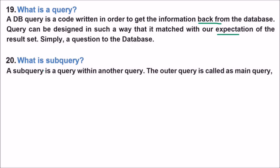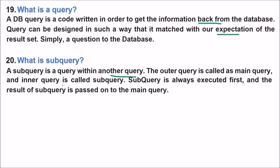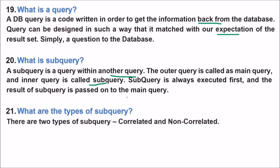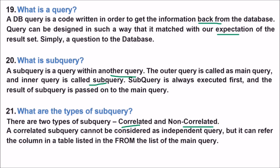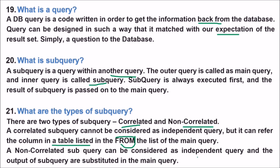What is a subquery? A subquery is a query within another query. The outer query is called the main query and the inner query is called the subquery. The subquery is always executed first and its result is passed to the main query. There are two types: correlated and non-correlated. A correlated subquery cannot be considered as an independent query but can refer to columns in the main query's FROM clause. A non-correlated subquery can be considered as an independent query and its output is simply substituted into the main query.